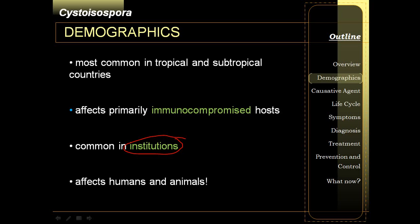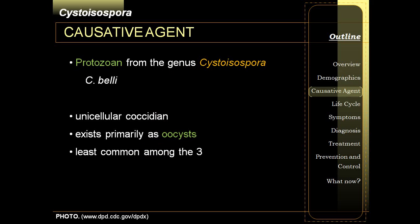It is very similar to Cyclospora — endemic in tropical and subtropical countries. And similar to cryptosporidiosis, it primarily affects immunocompromised hosts. It is of the genus species Cystoisospora belli, or Isospora belli. So they are synonymous with each other. Cystoisospora is also called Isospora, with the species belli.